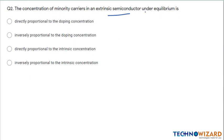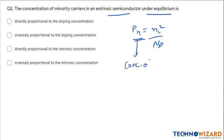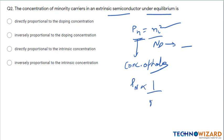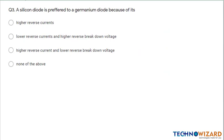Next question: the concentration of minority carrier in an extrinsic semiconductor under equilibrium. For an n-type semiconductor, pn will be equal to ni squared upon nd, where pn is the concentration of holes, ni is the intrinsic concentration, and nd is the donor density. Here pn is inversely proportional to nd, therefore the concentration of minority carrier will be inversely proportional to the doping concentration. Therefore option B is the correct answer.